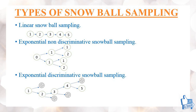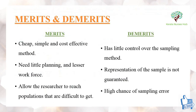The third type is exponential discriminating snowball sampling. The researcher finds the first person and asks for help to find two more persons. From those two, the researcher selects only the active person and with that person's help identifies the next two persons; the other person is dropped. This continues until the required number of samples is selected. So the three types are: linear, exponential non-discriminating, and exponential discriminating snowball sampling.